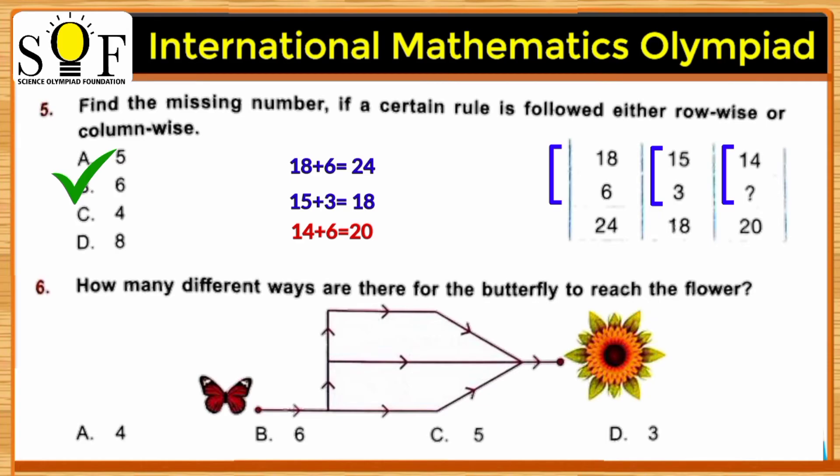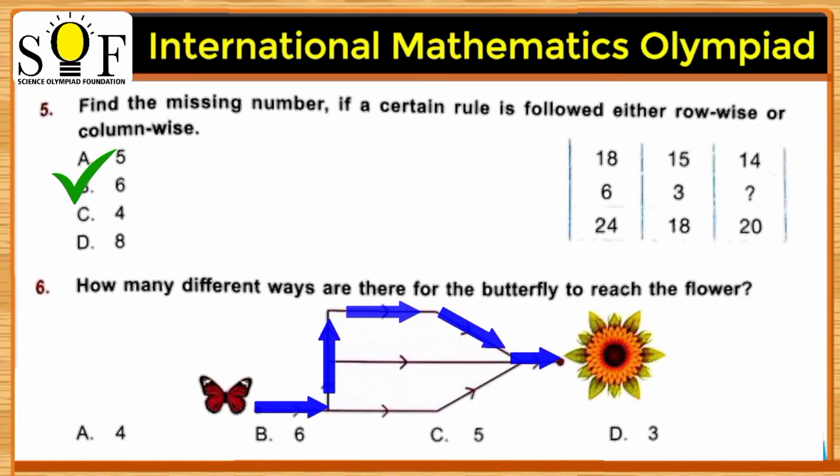How many different ways are there for the butterfly to reach the flower? Let's find out the different ways. So the butterfly can reach the sunflower in three different ways. The answer is option D, number 3.